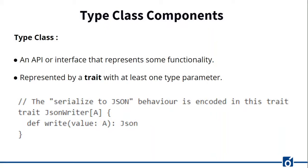The first component is the type class itself. A type class is an interface or API that represents some functionality we want to implement. In Scala, a type class is represented by a trait with at least one type parameter. For example, we can represent generic 'serialize to JSON' behavior like this. JSONWriter is a type class in this example, and the type parameter A will be the complete type of data we are writing.